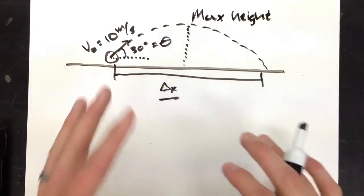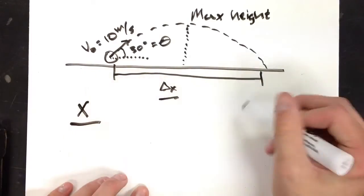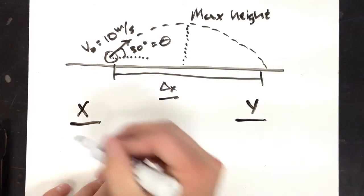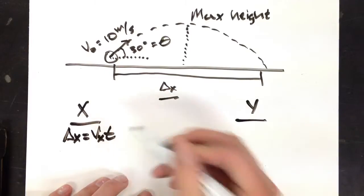So let's look at how to start this problem. First thing is still break up your dimensions. And I still have delta x equals vx t.